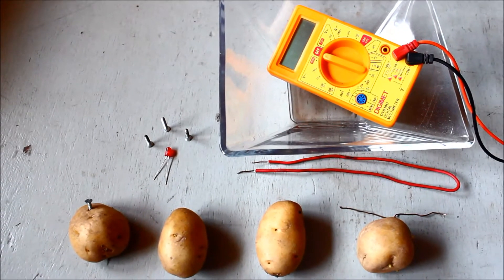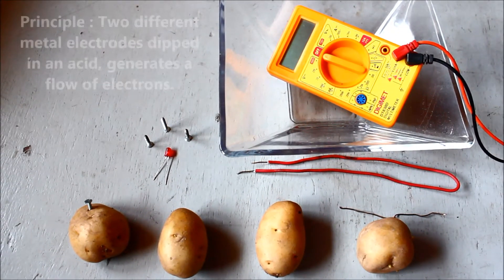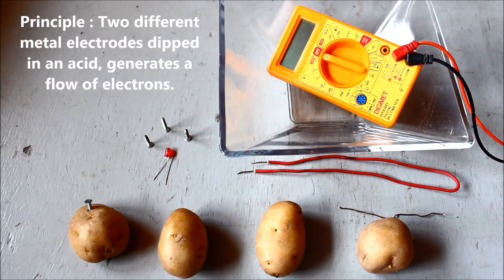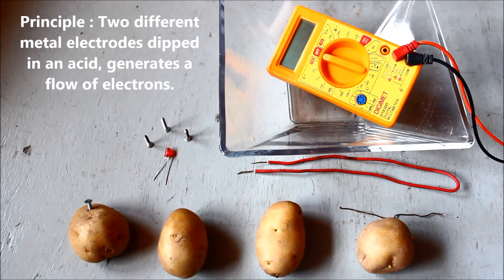Hey there, this is a cool science project on how to make a potato battery. The principle behind this project is that when two different metal electrodes are immersed into an acid, it generates a flow of electrons.